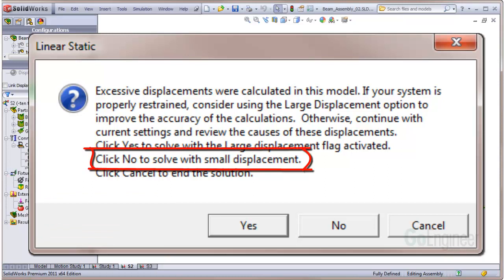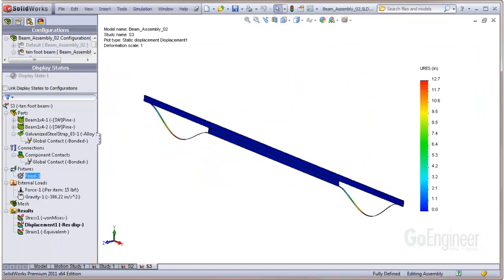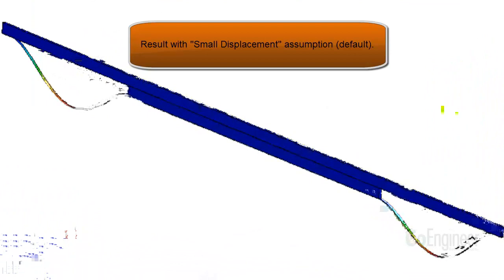This line here says click no to solve with small displacement. Being curious, we click on this option to continue to solve using the small displacement theory. Here's the resulting displacement of the system and you can see what has happened. The steel strap appears to be sagging under its own weight.